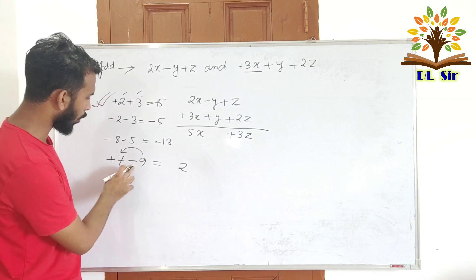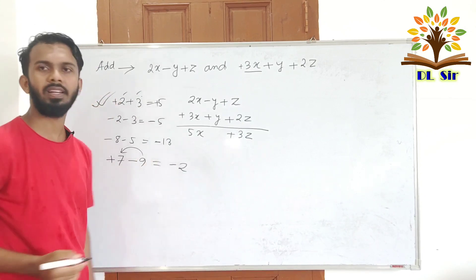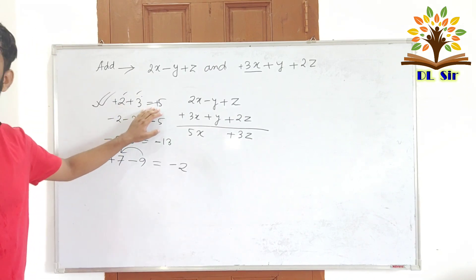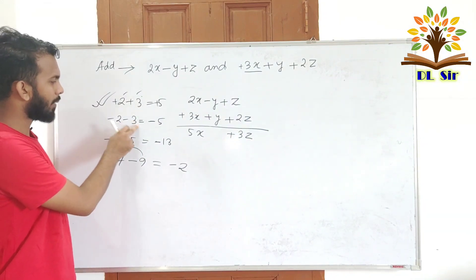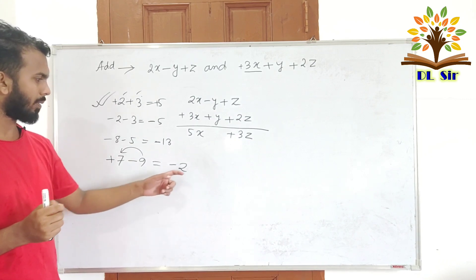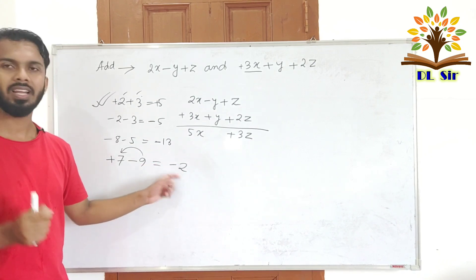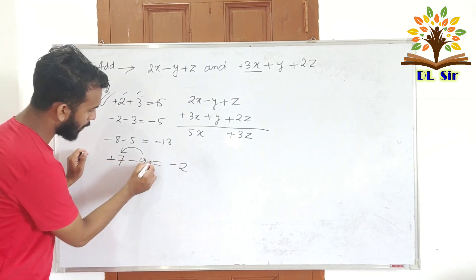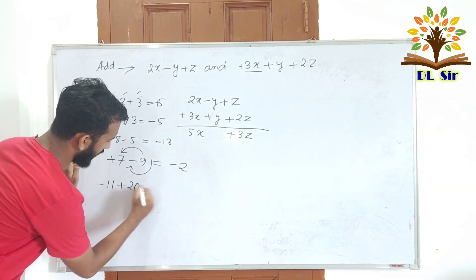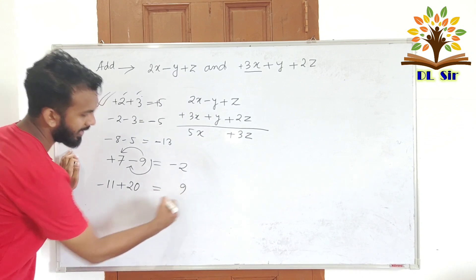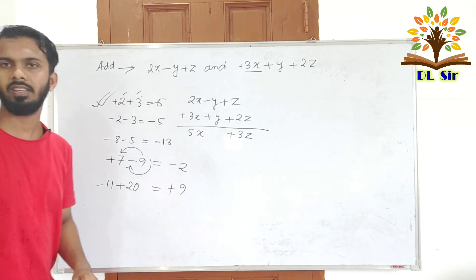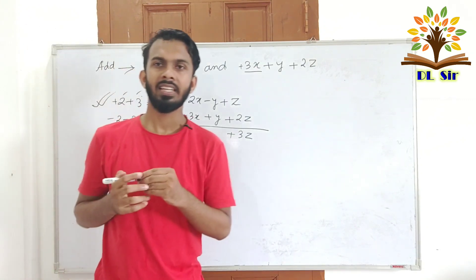Now if we have minus and minus, the result is plus. Plus and plus gives plus. The sign rules: if both numbers have the same sign, add them and keep that sign. If signs are different, subtract and keep the sign of the bigger number. For example, 20 minus 11 is 9.